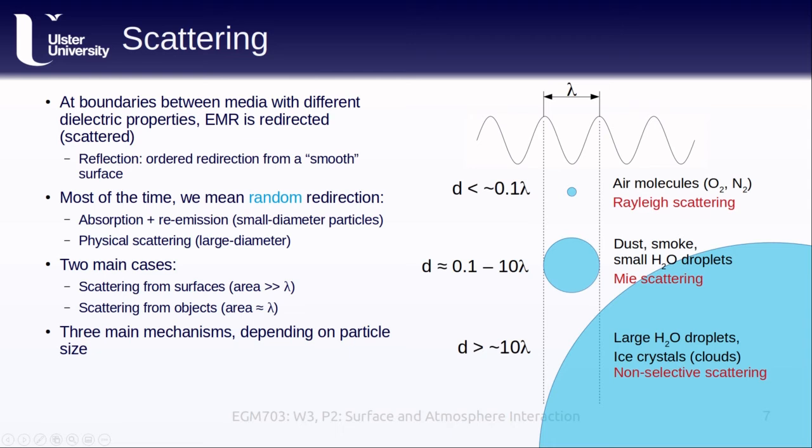Non-selective scattering occurs with particles that are bigger than about ten times the wavelength of the electromagnetic radiation. It's called non-selective because it scatters all wavelengths equally. This is caused by large water droplets or ice crystals, usually in the form of clouds. From the ground, clouds normally appear white to gray, owing to the relatively even scattering across different wavelengths. Another classic example of non-selective scattering is fog. The dull gray color of fog is caused by even scattering of relatively low levels of light.